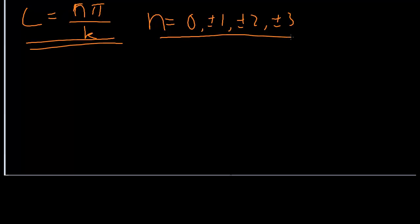We can make this a little more intuitive by looking at 2π/k = λ, so π/k is just λ/2. So the length of the rope has to be some integer multiple of λ/2.